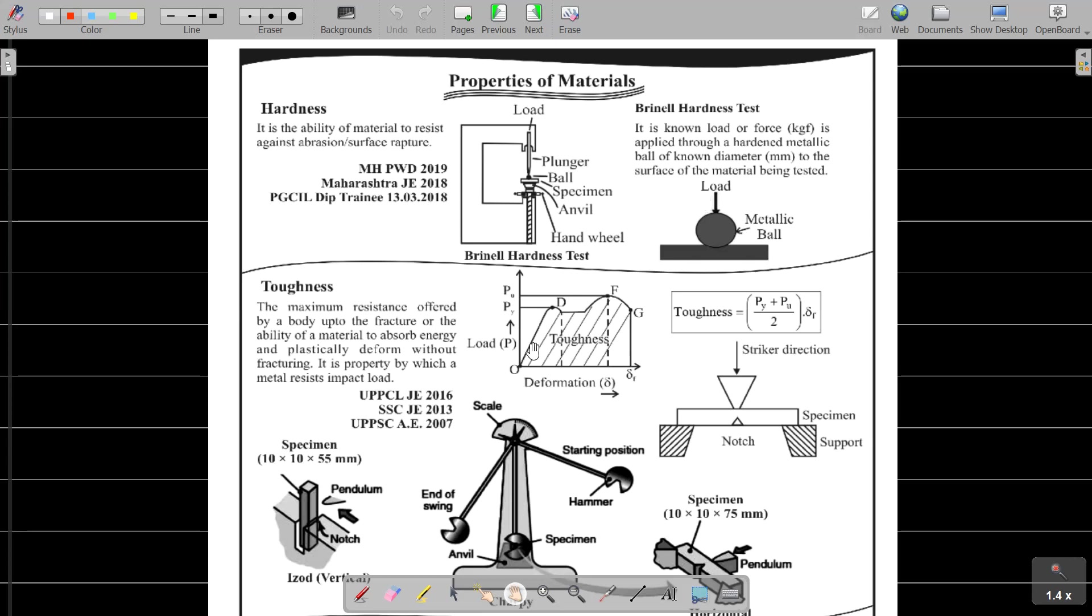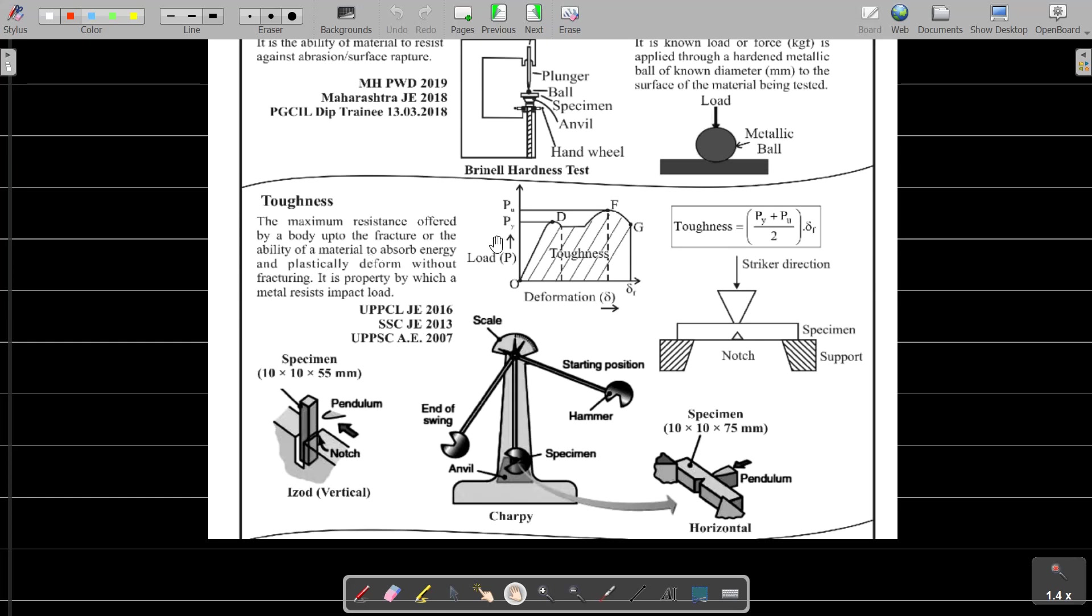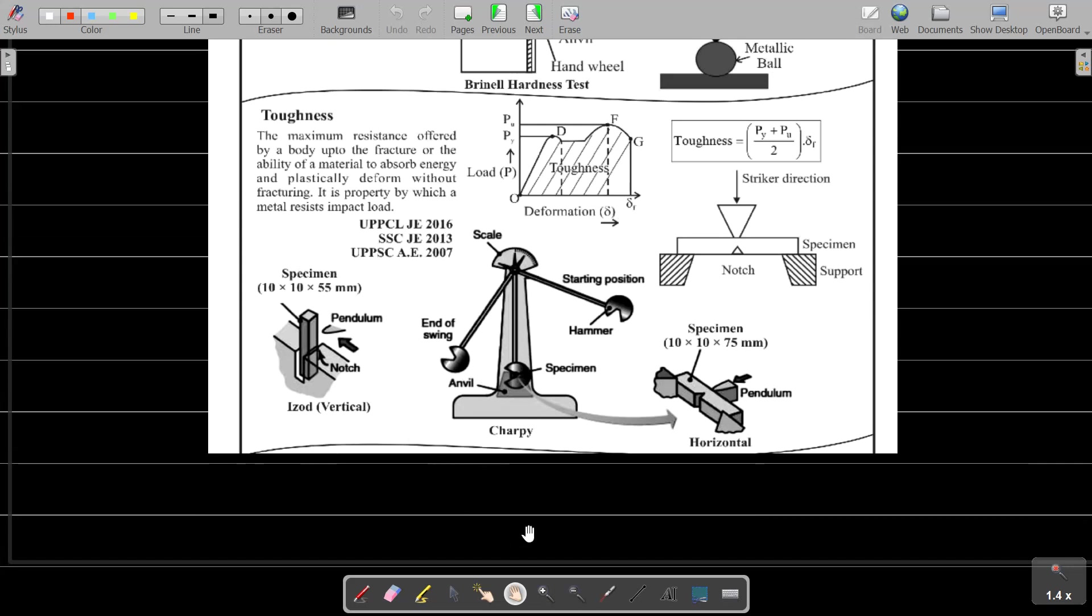Toughness is the maximum resistance offered by the body up to the fracture. It is the property by which material resists the impact loading. This is tested by Izod test and Charpy test. For Izod test, specimen size is 10 by 10 by 55 mm, and for Charpy test it is 10 by 10 by 75 mm.